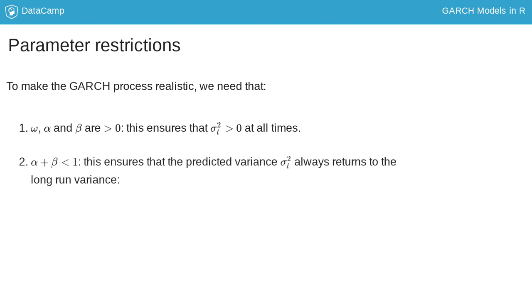Second, the sum of alpha and beta has to be less than 1 such that after a shock the GARCH variance always returns to its long-run value. The variance is then mean reverting with long-run variance equal to the ratio between omega and 1 minus alpha minus beta.